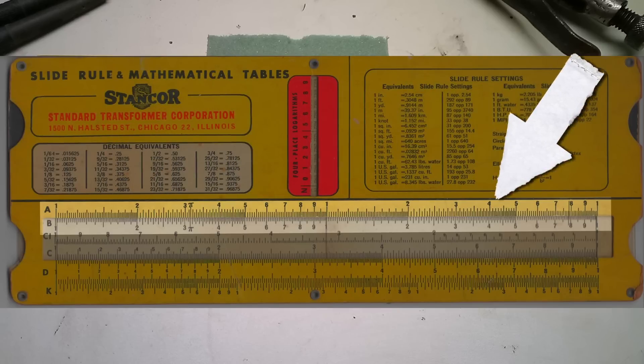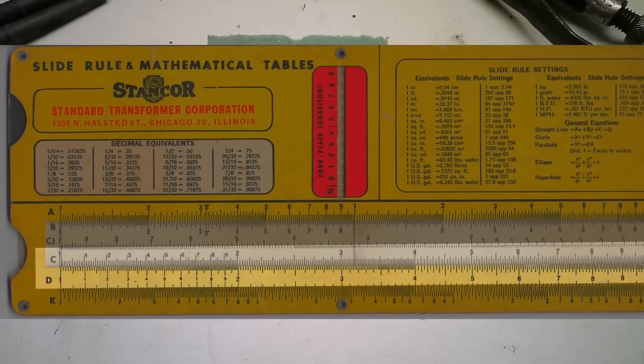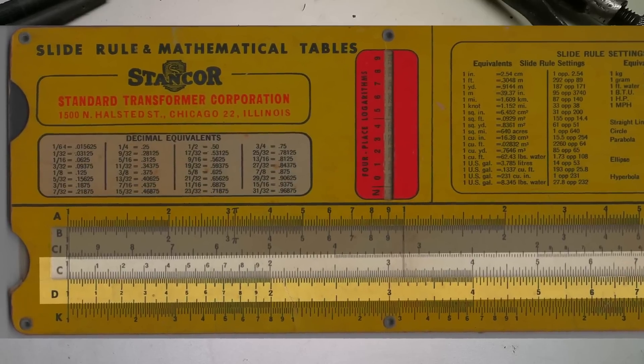The C and D scales are your finer precision scales. These just go from 1 to 10 and these are for basic multiplication, which is pretty much all I know how to do on these.